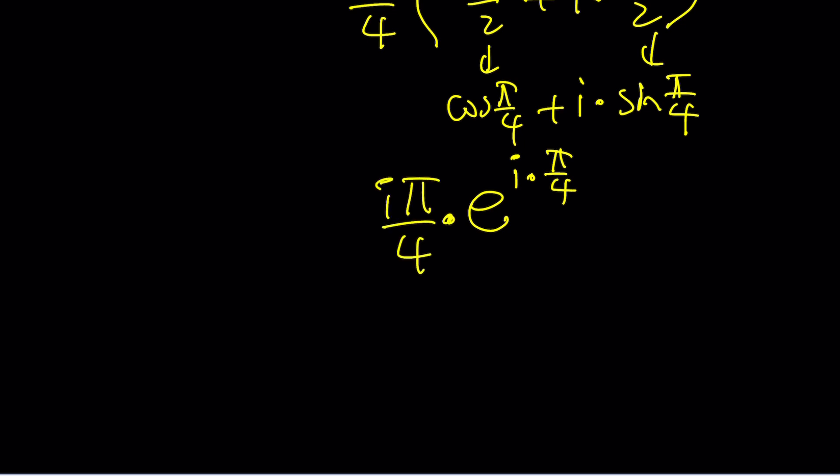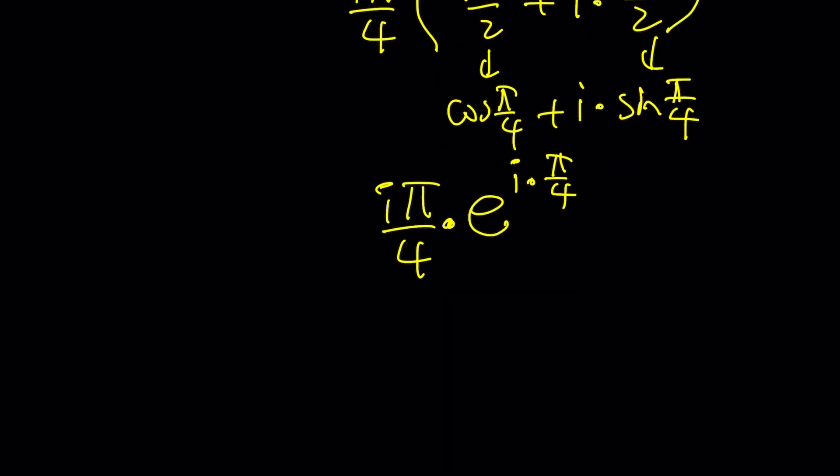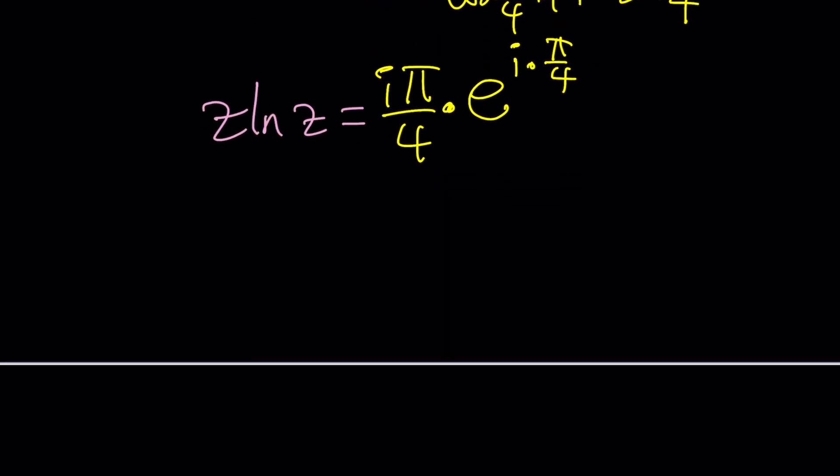Now we can go ahead and bring in the left hand side because we didn't really need it all this time. z ln z. And do the ln trick one more time. This can be written as ln z times e to the power ln z. And compare it to i π/4 times e to the power i times π/4.